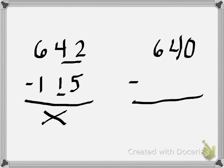115. 15 is between 10 and 20. With a 5 it's closer to 20. 115 rounds to 120. 0 minus 0 is 0, 4 minus 2 is 2, and 6 minus 1 is 5. Did you get the answer of 520?